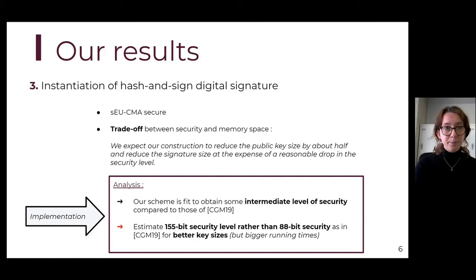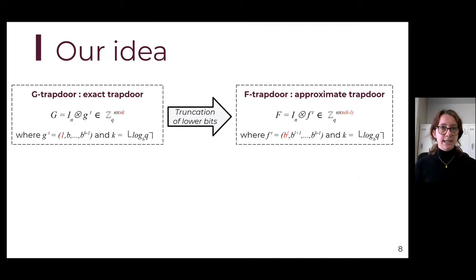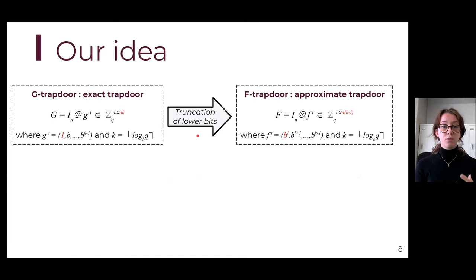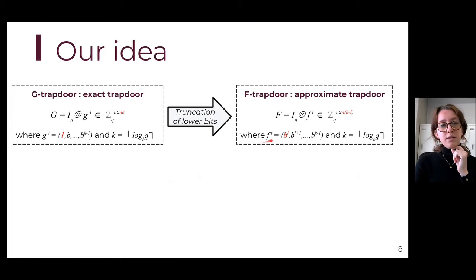I would like to go into more detail about our construction. Our main idea was built by observing what was done to go from the G-trapdoor construction to the F-trapdoor construction. We can interpret what they did as a truncation of the lower bits in the G-trapdoor construction, but only of the lower bits in the gadget matrix. Here you can see the definition of the gadget matrix G, defined with regard to a gadget vector g. In the gadget vector, all low-weighted bits have been discarded — the gadget vector f begins from b to the power l.